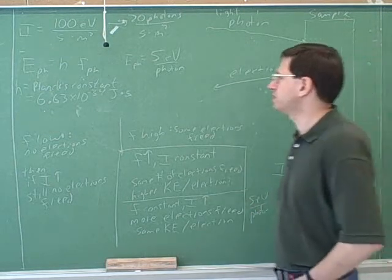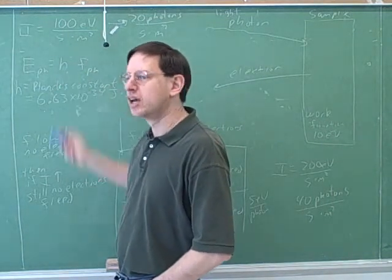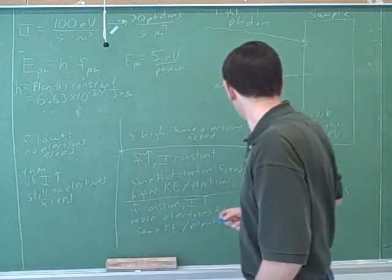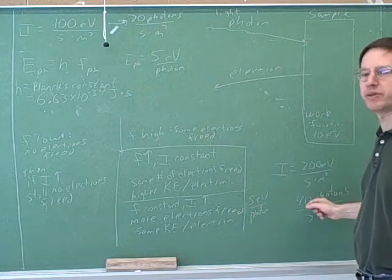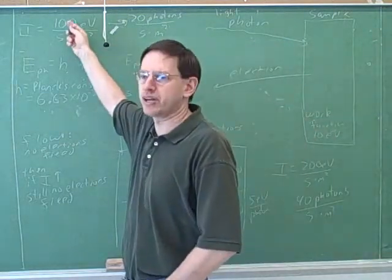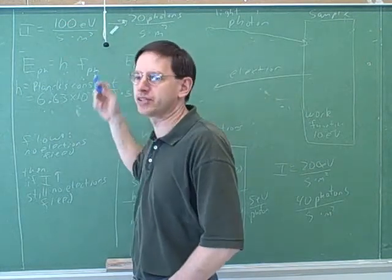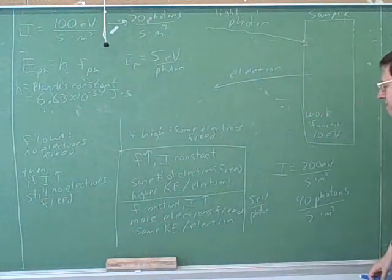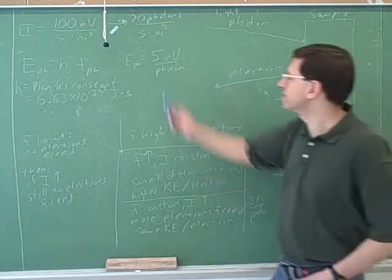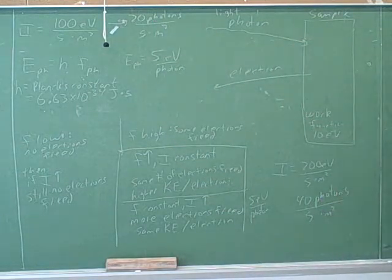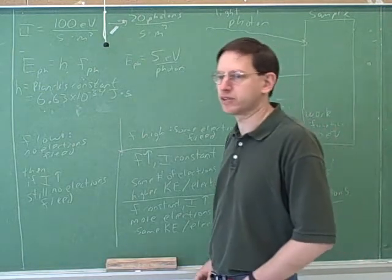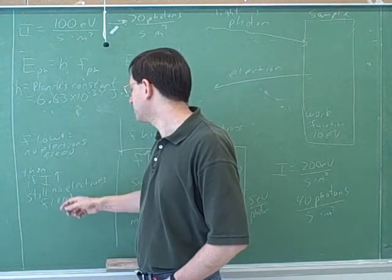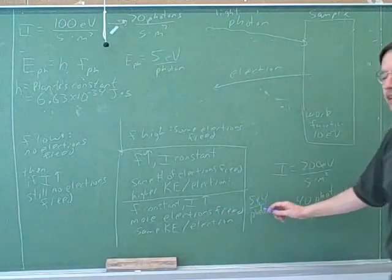But it doesn't increase the energy of the individual photons. Why not? Because that comes from the equation E = hf, and we haven't changed the frequency. So how does intensity deliver more energy? It delivers more energy not by increasing the energy per photon, but by increasing the number of photons. There are really two ways to affect the total energy: change the energy per photon, or change how many photons you're shooting. Increasing the intensity just increases the number of photons — we went from 20 to 40 photons per second per square meter. But we didn't change the energy per photon because we didn't change the frequency. That explains why intensity has no effect if we didn't have any electrons being freed in the first place — we're still not going to free any because we haven't passed this threshold.